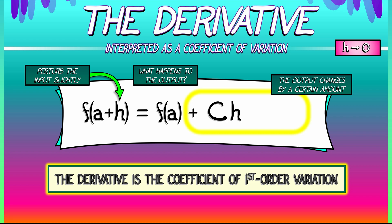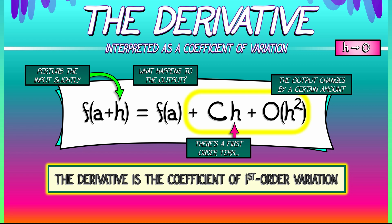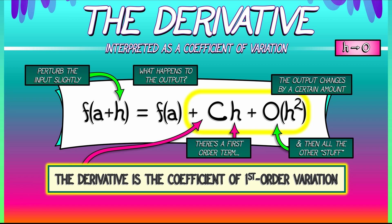We have all the other stuff, but we can throw that into a big O trash can — it's all going to be in big O of h squared. So we've got this first-order term, and then we've got all the other stuff. The interpretation of the derivative is that it is the coefficient of this first-order term, this first-order variation in the function's output. That constant, capital C, is really just f prime at a.